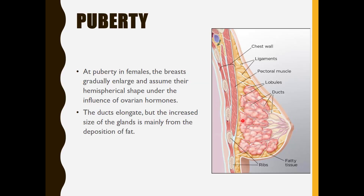At puberty, in females the breast gradually enlarges and assumes a hemispherical shape — meaning half-spherical — under the influence of ovarian hormones. The ducts elongate; they increase in length. However, the increased size of the gland is mainly due to the deposition of fat. This fatty tissue is what primarily increases the size of the breast.